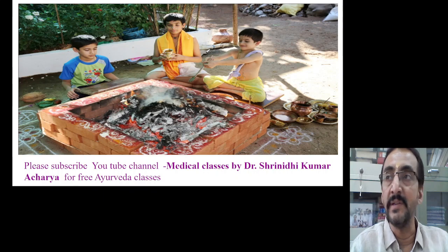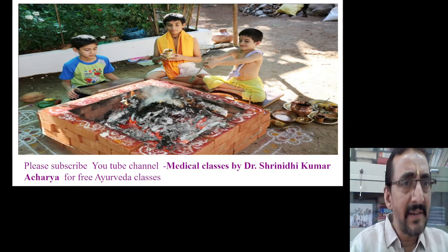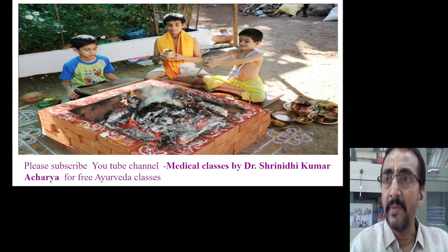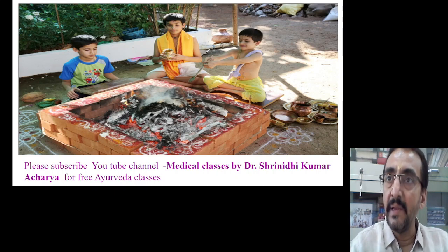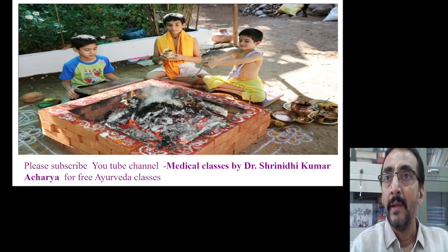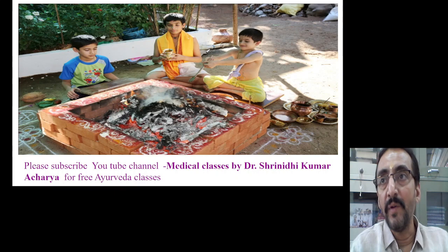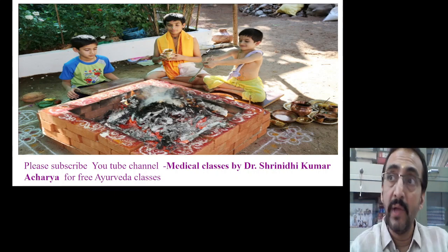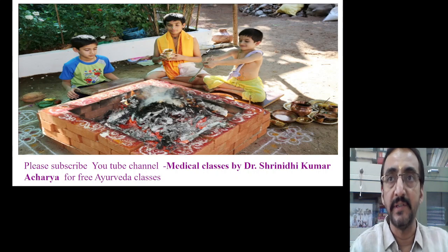In Ayurveda, so many organs are mentioned — like pliha, yakrit, and costa — but nowhere is the internal structure of these organs described. The spleen is mentioned by name, but what is inside the spleen, what is happening inside the spleen — this microscopic analysis is not mentioned in Ayurveda anywhere, because the approach is more functional.